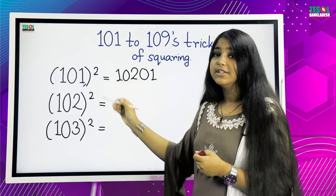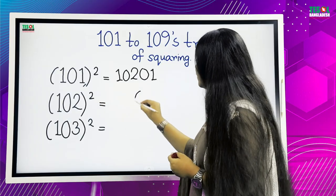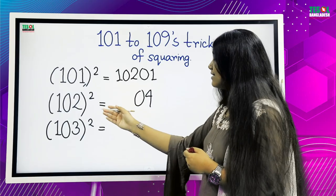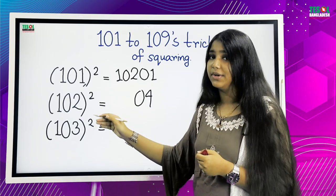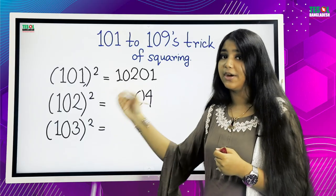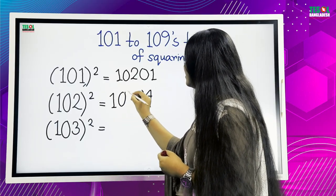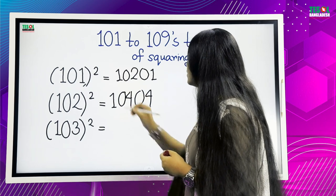Now, 102 squared. 2 times 2 is 4, but we will write 04. Now, we will add the last number with the whole number. That is, we will add 2 with 102. So, 104, 04 is the answer. 102 squared.